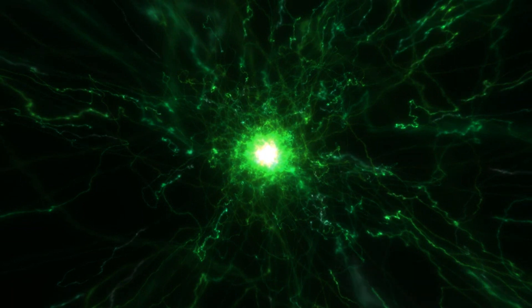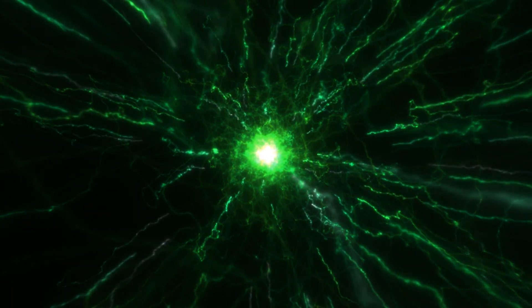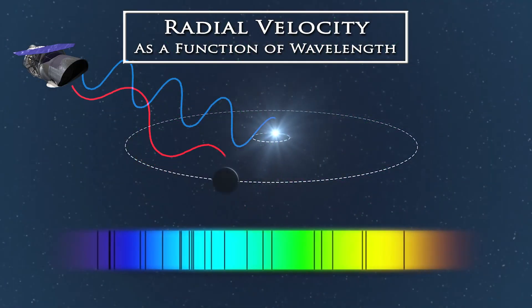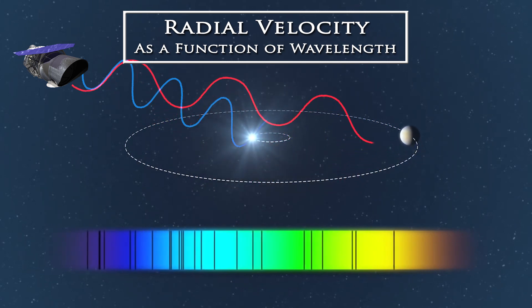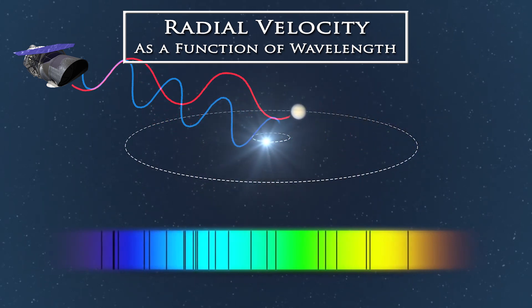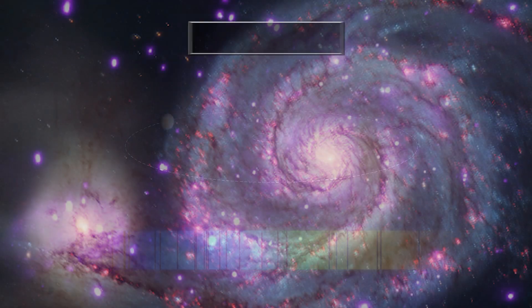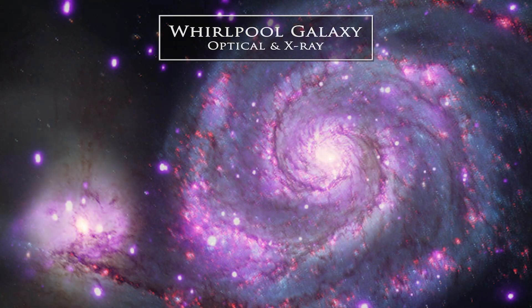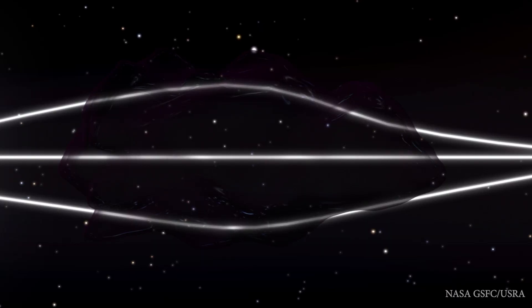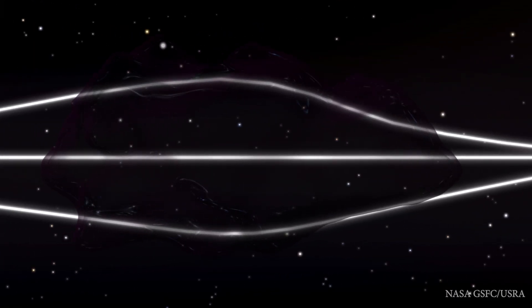Besides rotational velocities in spiral galaxies, mass can be estimated in three different and independent ways regarding galaxy clusters: the scattering of radial velocity for each galaxy in the cluster, X-ray detection of gases allowing us to measure the density and pressures and thus give us the gravity, and one more method you may be familiar with — gravitational lensing.